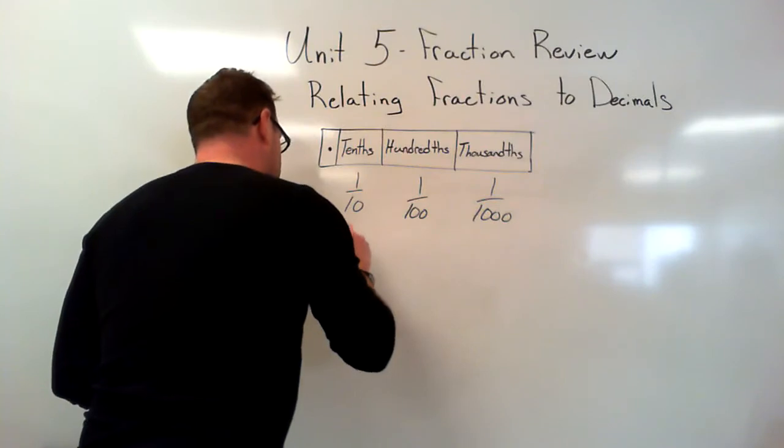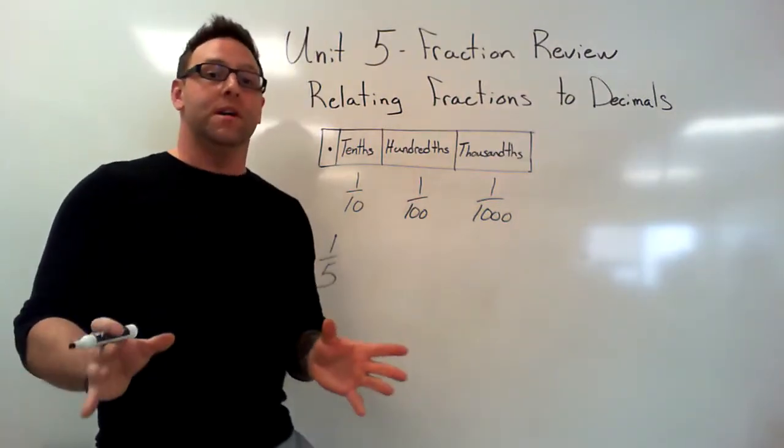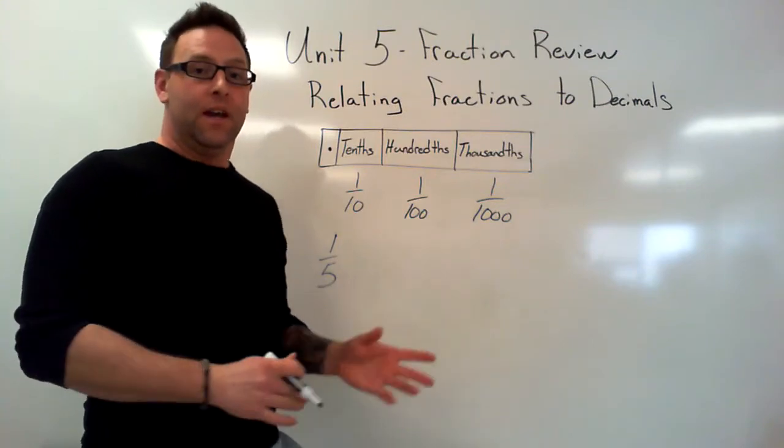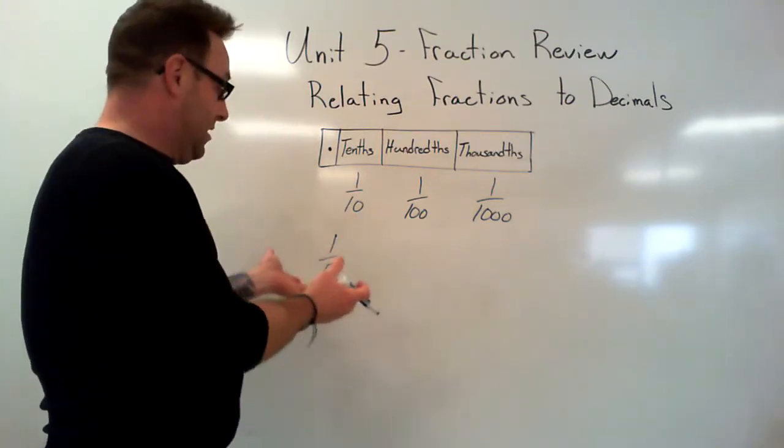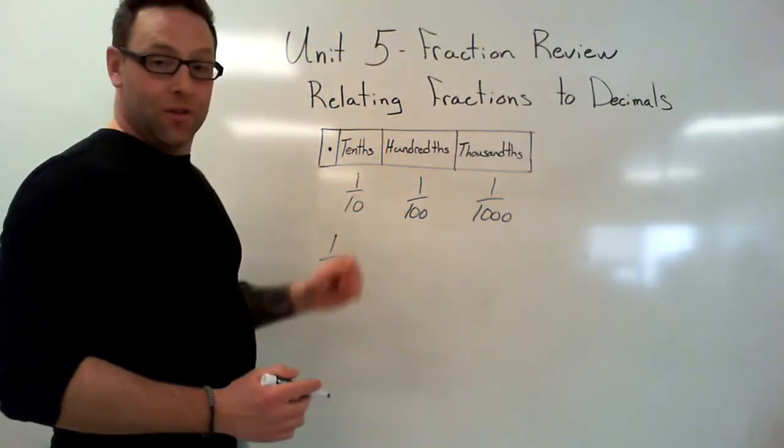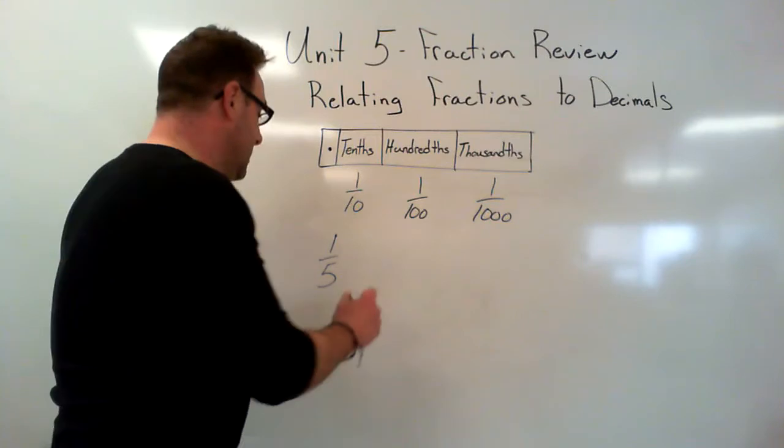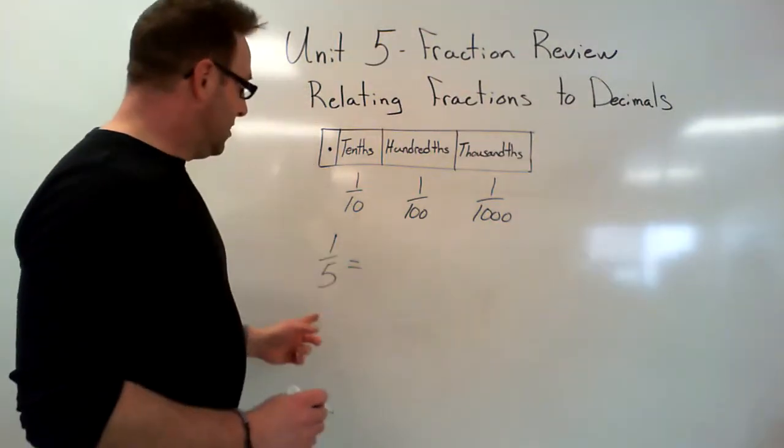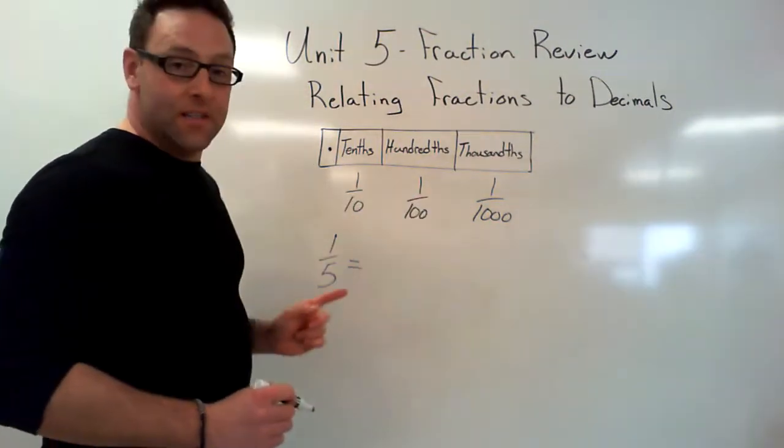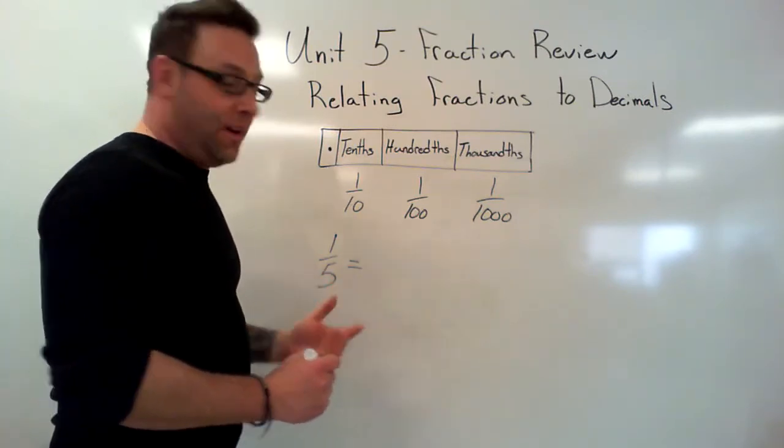1 over 5. I want to make this into a decimal. I don't know what that looks like right now, but good thing we just learned about how the place values work with the decimals. What's an equivalent fraction that you can make using these fractions up here? Pretty simple: 10, let's go with that.